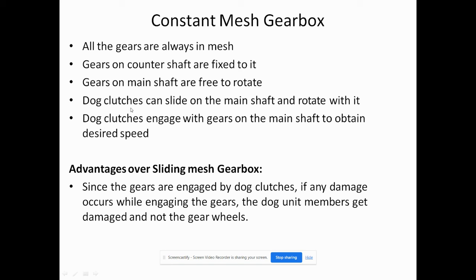Here we are using dog clutches. The dog clutches can slide on the main shaft and rotate with it. The dog clutch engages with the gear on the main shaft to obtain desired speeds. If it moves to the left side it has some speed, and if it moves to the right side it has another speed — like that, desired speeds are obtained.